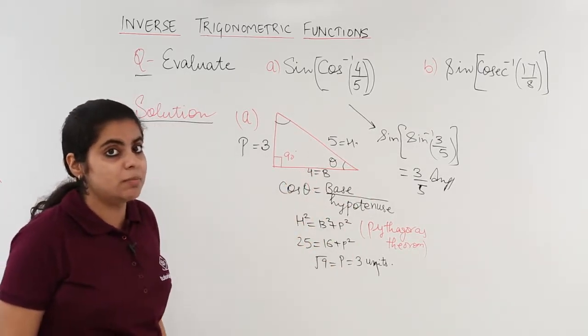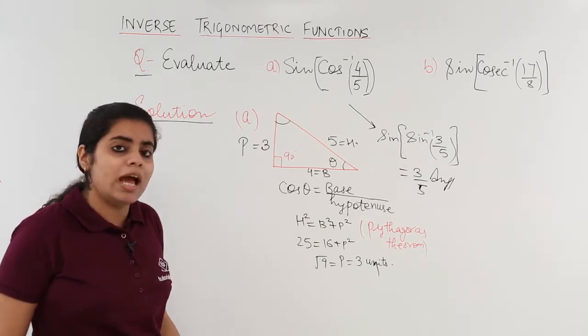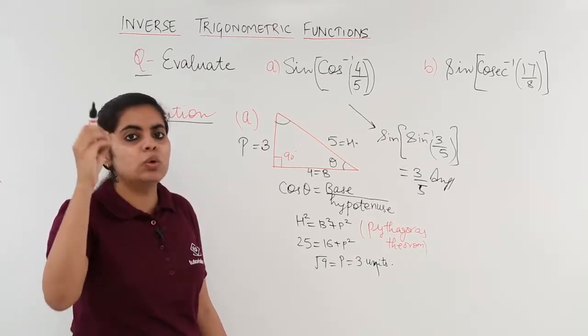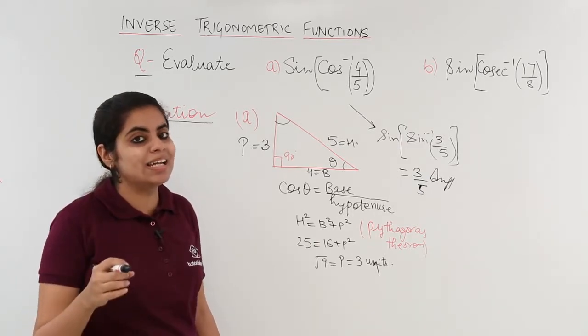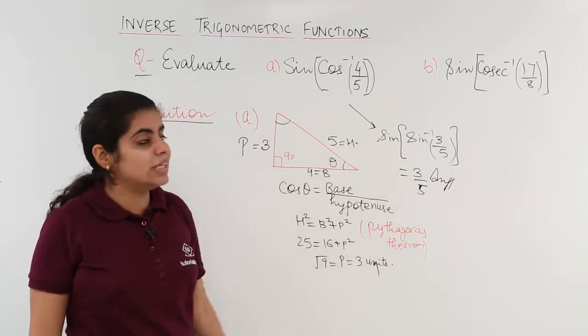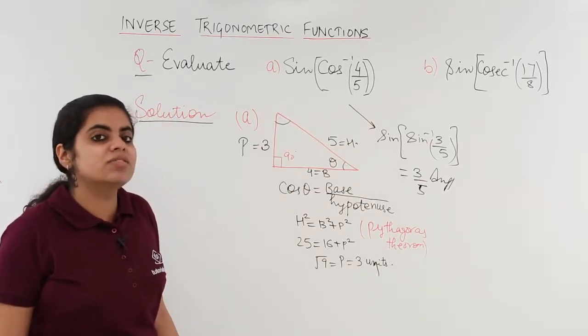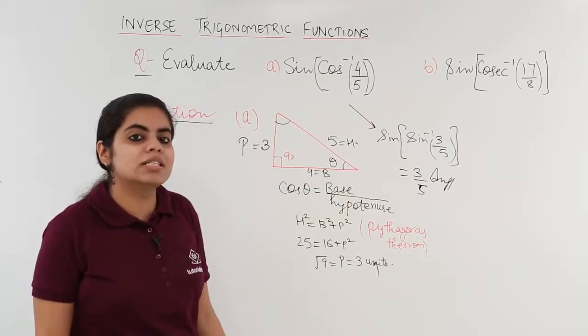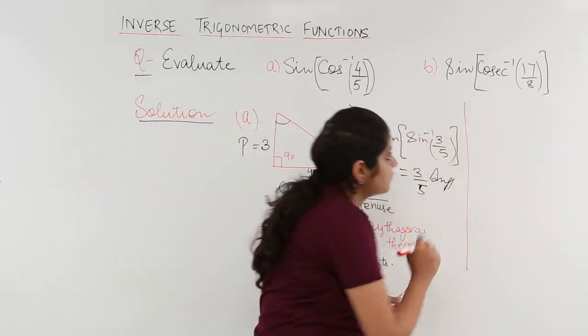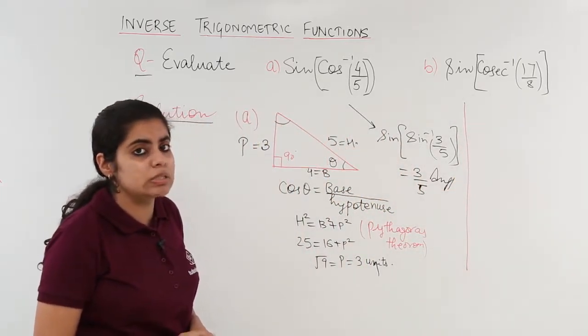What about the second part? The second part is related to sine and cosecant. Now, there is a simple, everybody knows the relation that sine and cosecant are reciprocals of each other. So, if I have cosecant inverse as 17 upon 8, what is sine inverse?